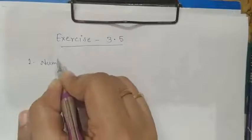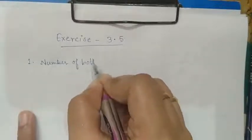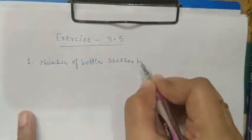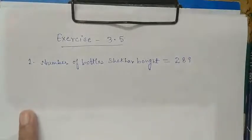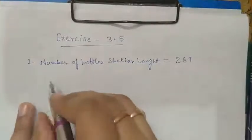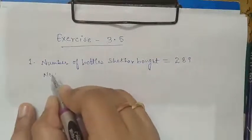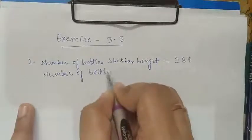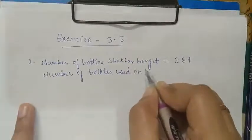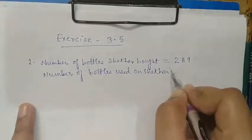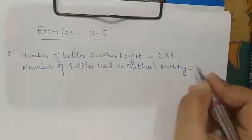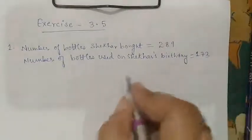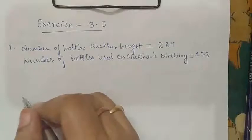So we will write: number of bottles Shekhar bought is equal to 289. And the question reads, on his birthday 173 bottles were used. Therefore, we will write the next sentence as: number of bottles used on Shekhar's birthday is equal to 173. And you have to find out the number of bottles that were used on his sister's birthday.